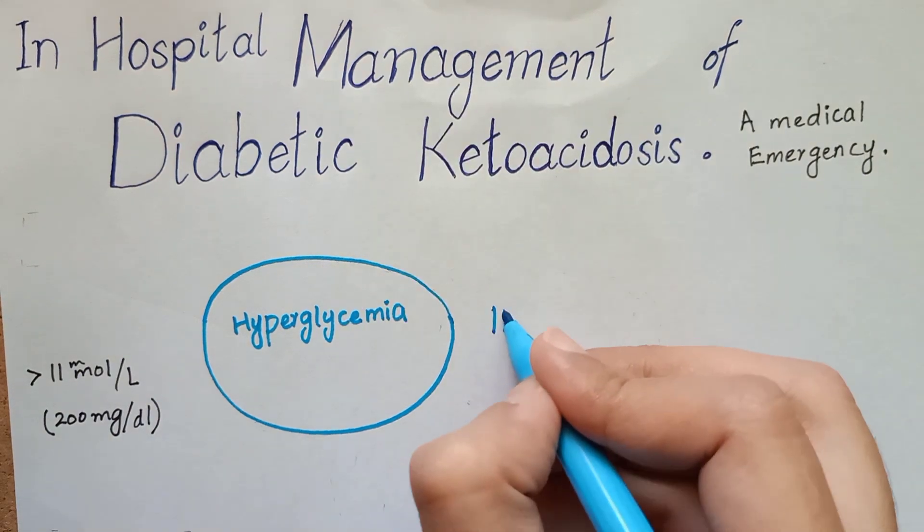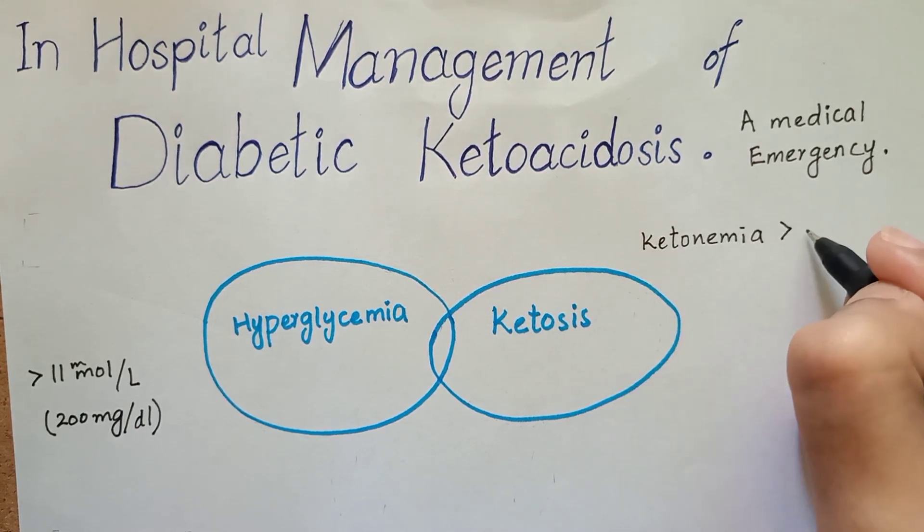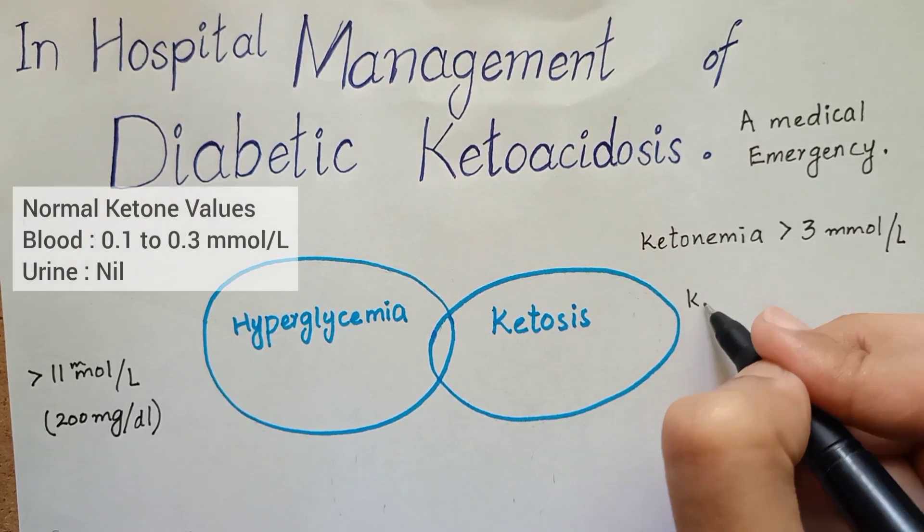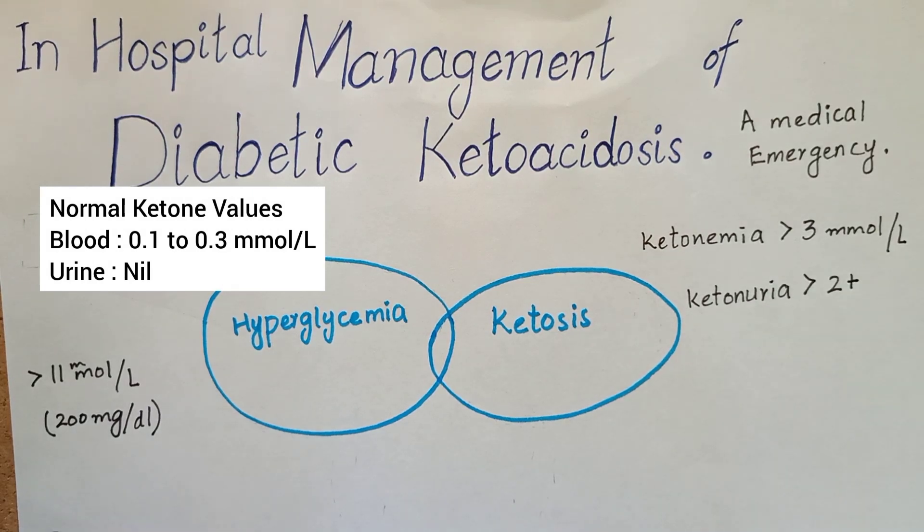The second feature is ketosis, having ketonemia of more than 3 millimole per liter or ketonuria of more than 2 plus on standard urine stick.